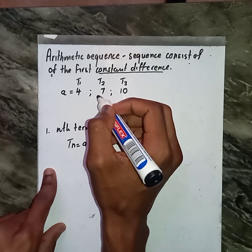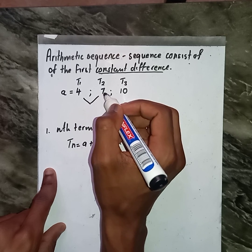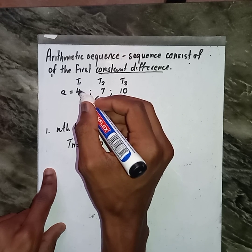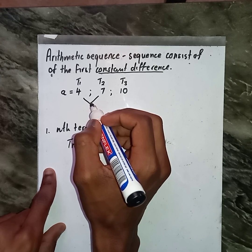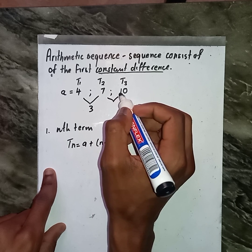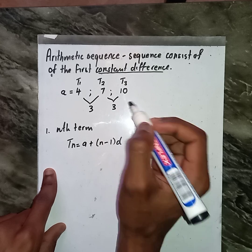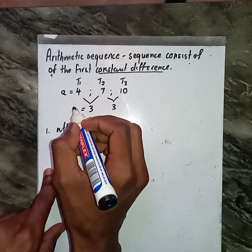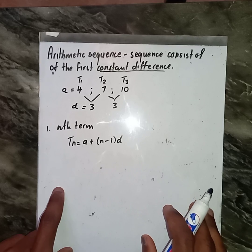For us to find the value of d, just need to say 7 minus 4, going to get 3. Then, 10 minus 7, we also get 3.